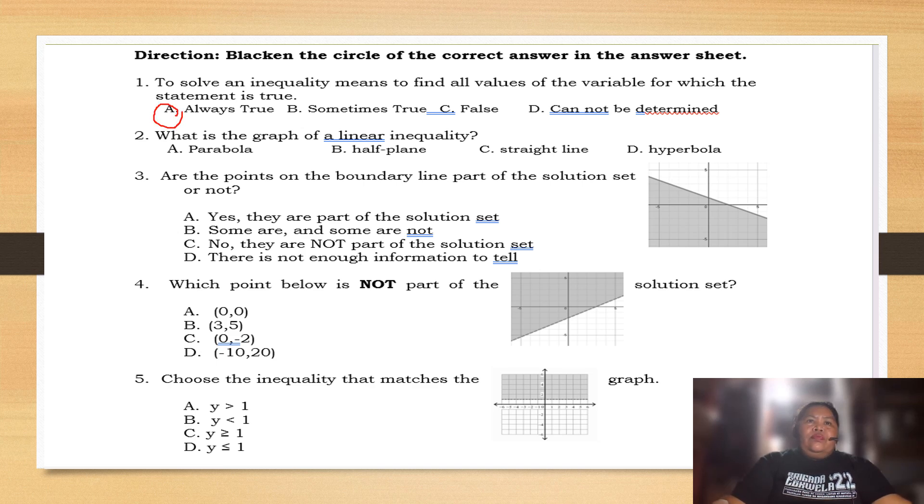It's always true. What is the graph of linear inequality? A, parabola, B, half plane, C, straight line, D, hyperbola. So, if you studied well, do you know that the answer is B? It's always a half plane, like this.